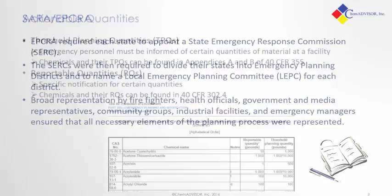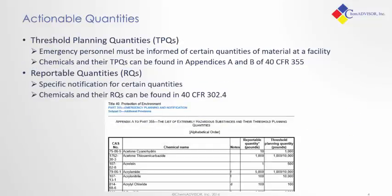So if you have dealt with SARA, you've likely come across these different actionable quantities. First we have Threshold Planning Quantities, or TPQs. Basically, those are quantities such that if you have a material at a facility above that quantity, it triggers notification requirements. You might also see Reportable Quantities, or RQs, but those deal more with spill reporting. Here I have a little snippet from the Code of Federal Regulations which shows how that information is listed.